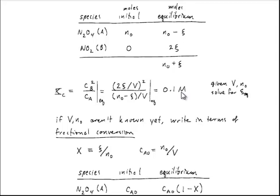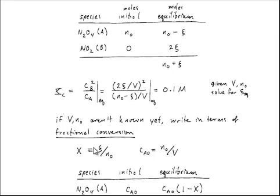We really only have one variable in this problem if V and N0 have been specified, and that is to solve for the extent of reaction at equilibrium. If V and N0 aren't known yet, we can still make progress by writing everything in terms of what's called a fractional conversion — that is the fraction of your reactants that have been converted into products.